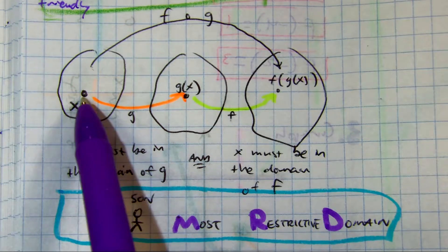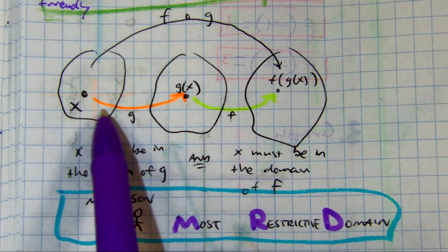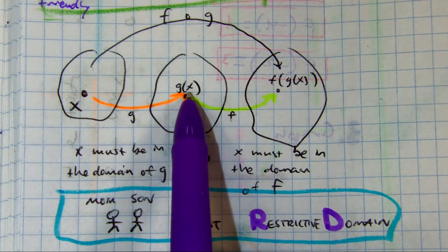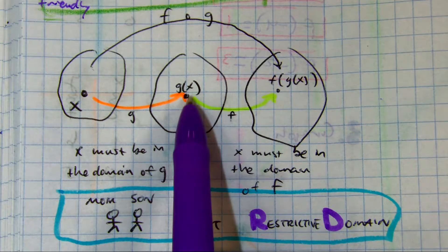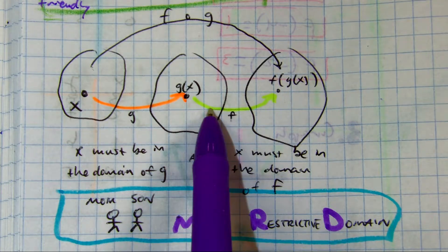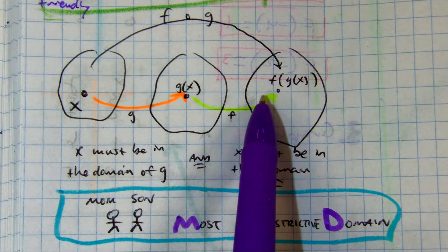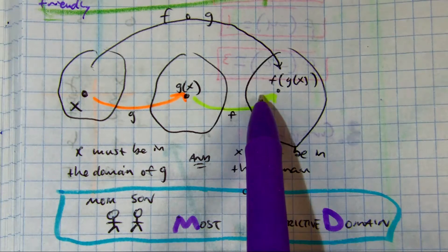If I take an x value, an input, I'm putting it into the function of g and I get g of x. And then whatever the answer is, I put it into the function of f and I get something called f of g of x.